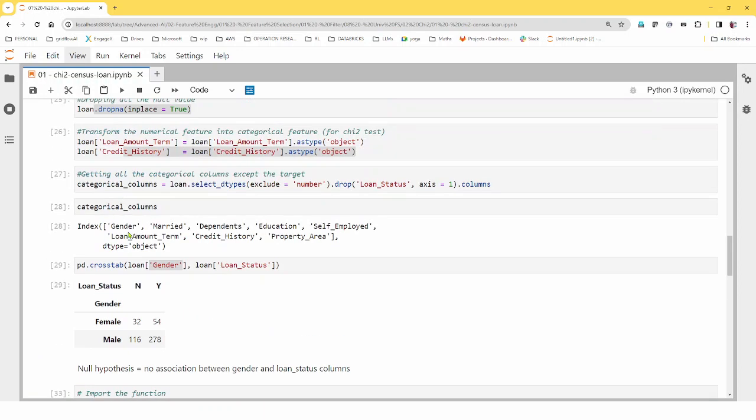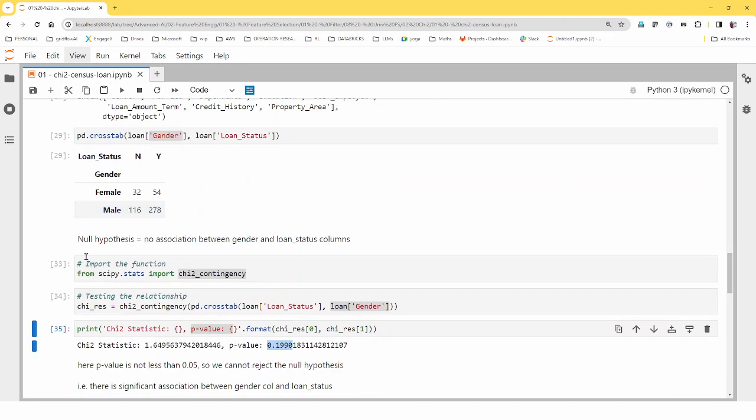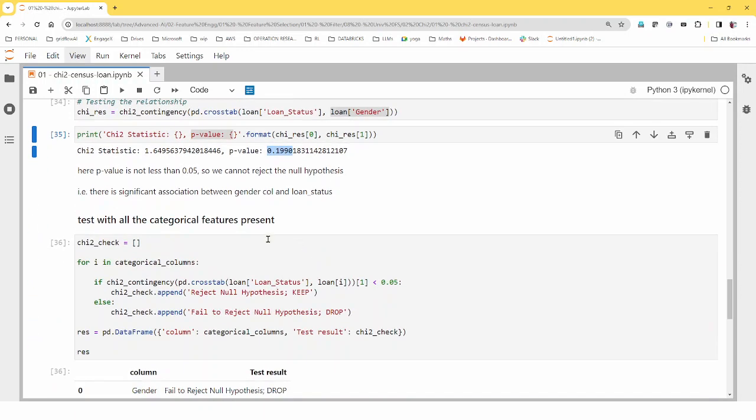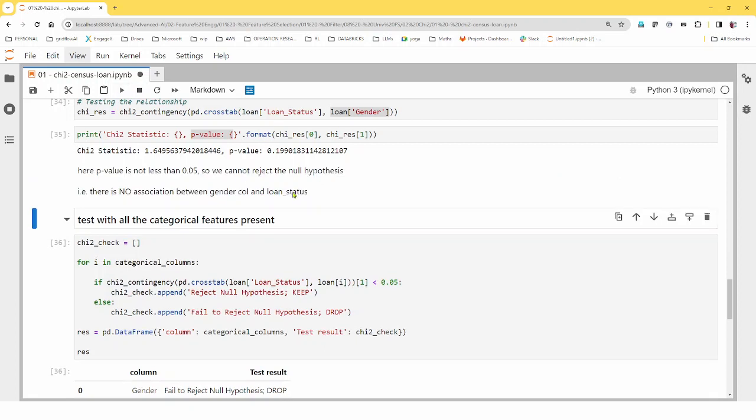Yeah, just a second. Yeah, so there is no association between the gender and the loan status, right? So that holds true. That means no association. So we are not able to reject the null hypothesis. So we are saying there is no association. So I had wrongly mentioned here, no association between gender column and loan status.